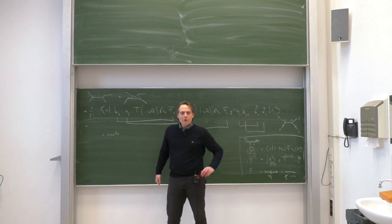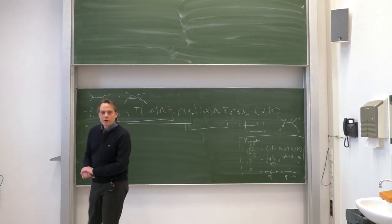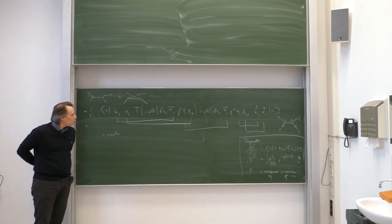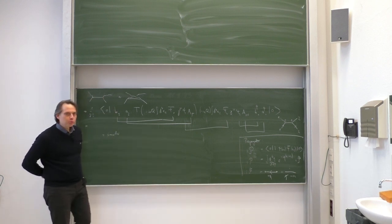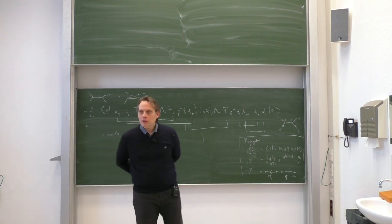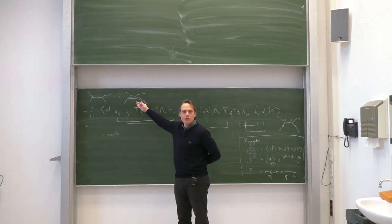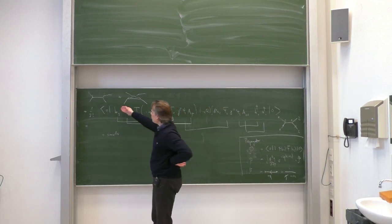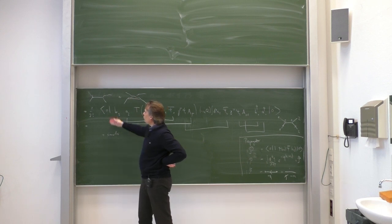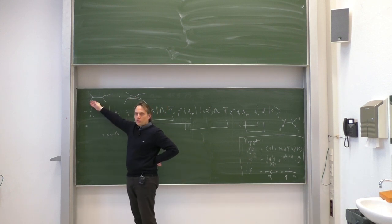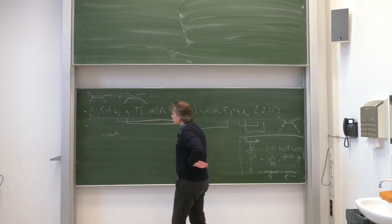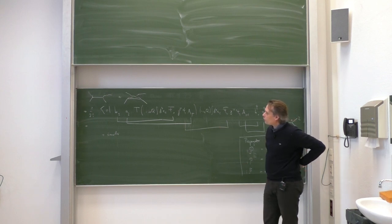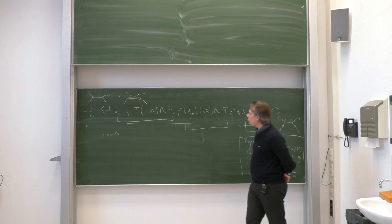Welcome back. Let us continue with our derivation and explanation of Feynman rules and Feynman diagrams. We are in the middle of computing and analyzing the Feynman diagrams for so-called Compton scattering in QED at tree level. Compton scattering is the process where we have electron-photon scattering — one incoming electron and one incoming photon, and also one outgoing electron and photon.